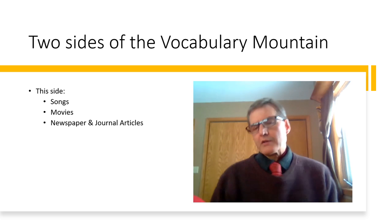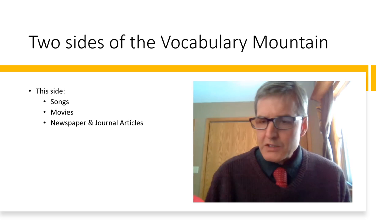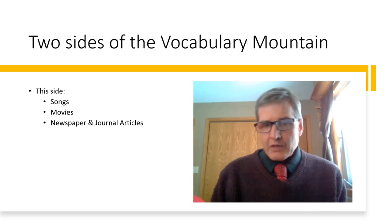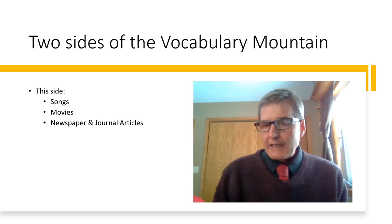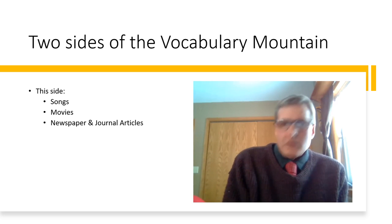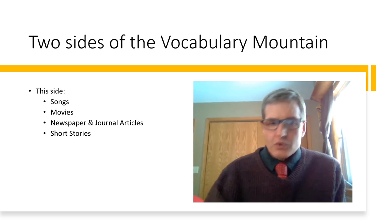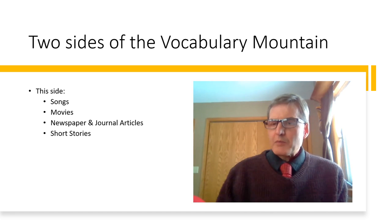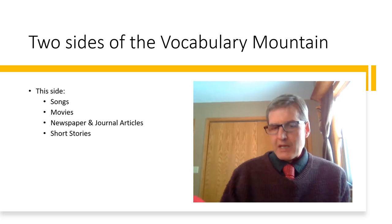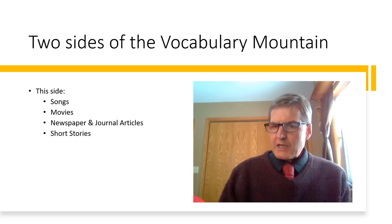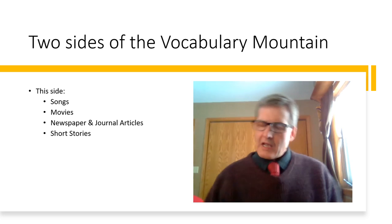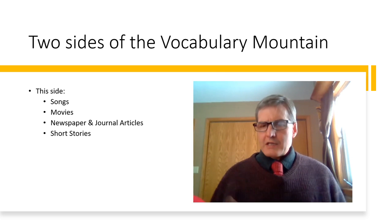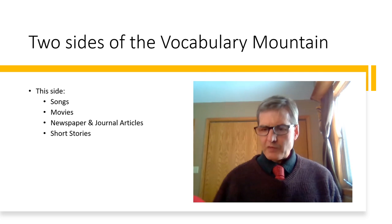Reading newspaper and journal articles is also accessible because these are current events — you're probably aware of what's going on anyway, you have a lot of context, and the vocabulary is usually international in many cases, and the articles are relatively short. Short stories too might not use current-event type vocabulary, but precisely because they're short — say eight or ten pages — you can read them at one sitting. And even if you don't get everything, there are no threads you need to tie together and keep in a larger context in your mind.